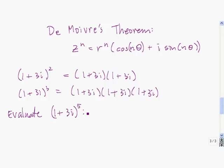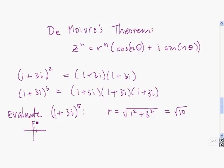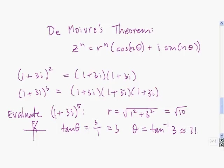Let's evaluate 1 plus 3i raised to the fifth power. First we get the trigonometric form of 1 plus 3i. R equals the square root of 1 squared plus 3 squared, which is the square root of 10. The point is at 1 over and 3 up, so tangent of theta equals 3 divided by 1, giving theta equals the inverse tangent of 3, which is about 71.57 degrees.